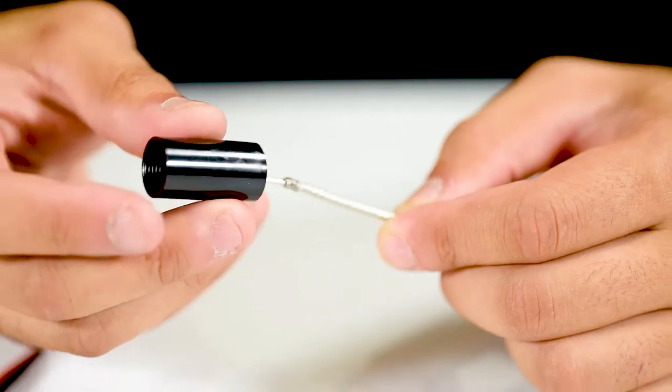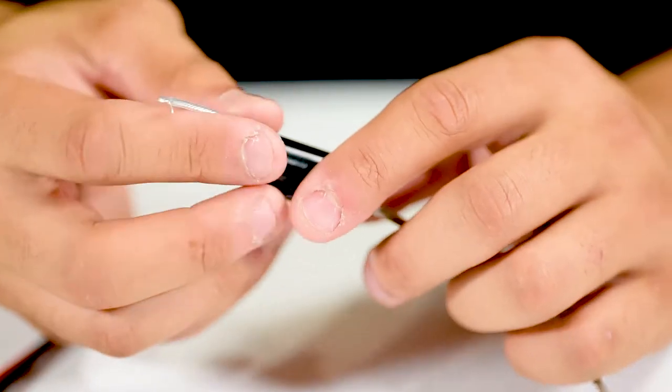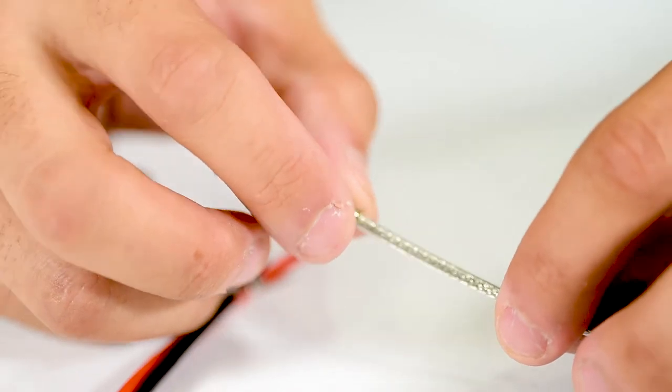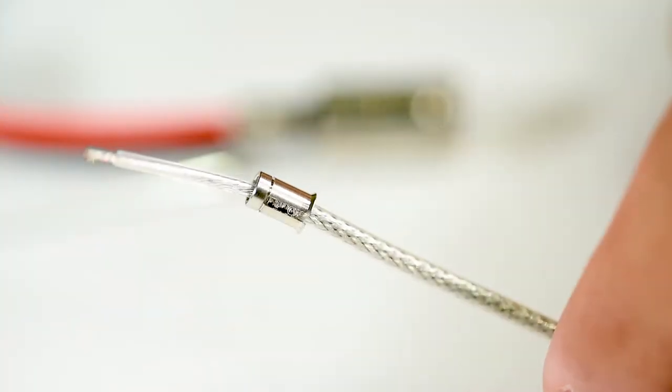Slide the connector cover over the coaxial cable. Place the ferrule over the 3 eighths inch braided wire of the coaxial cable.